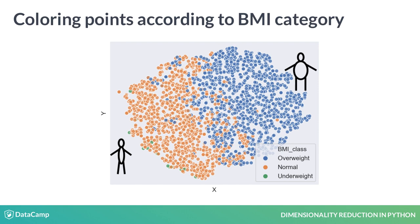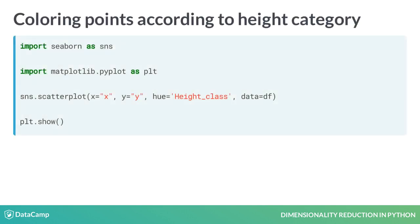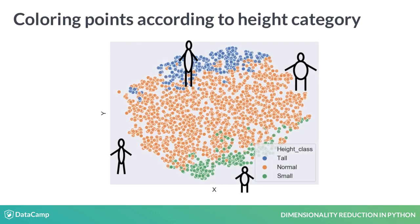From the 90-plus features in the dataset, TSNE picked up that weight explains a lot of variance in the dataset, and used that to spread out points along the X axis, with underweight people on the left and overweight people on the right. We've also added a column with the height categories to the dataset. If we use this height class to control the hue of the points, we'll be able to see that in the vertical direction, variance is explained by a person's height. Tall people are at the top of the plot, and shorter people at the bottom.